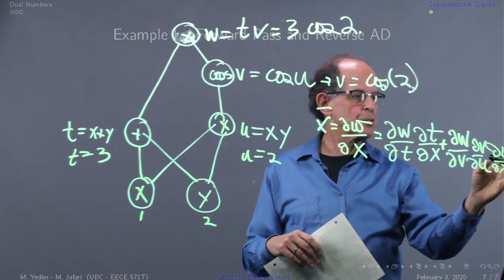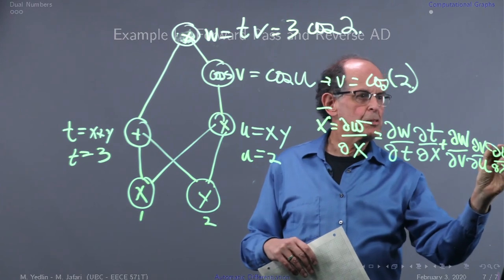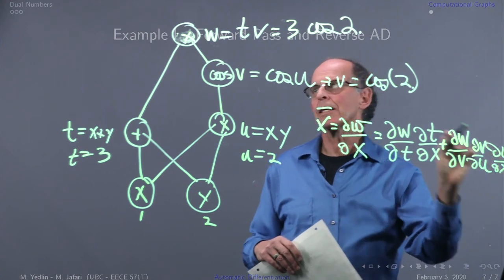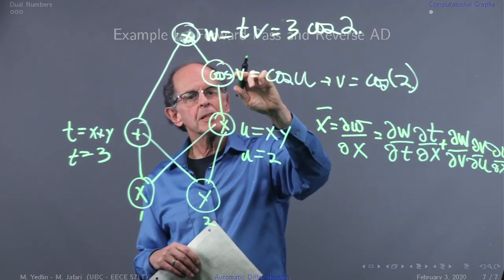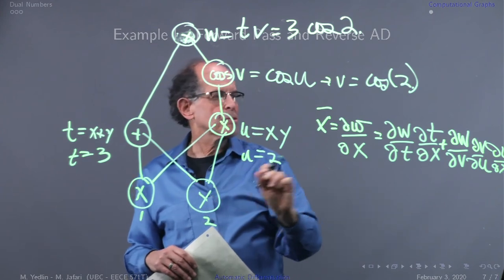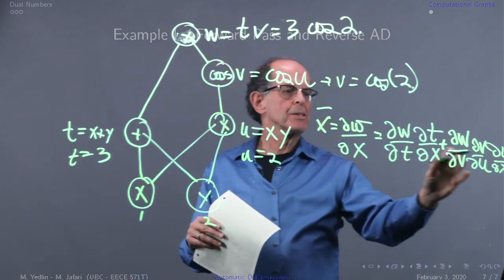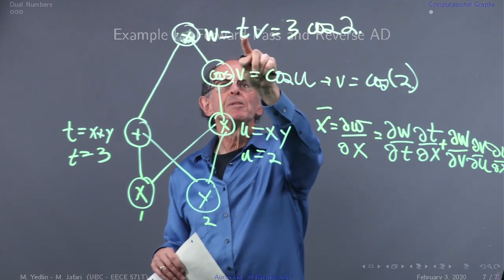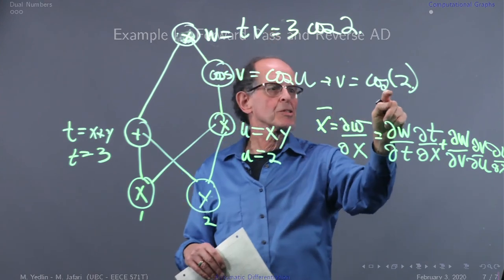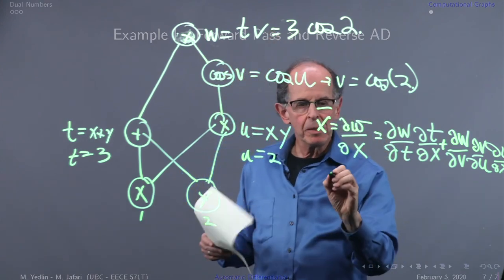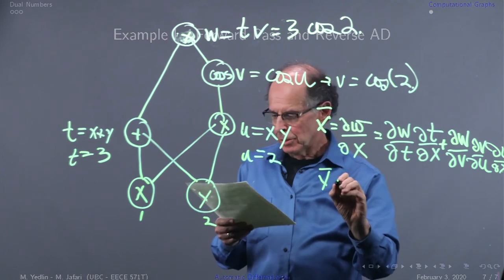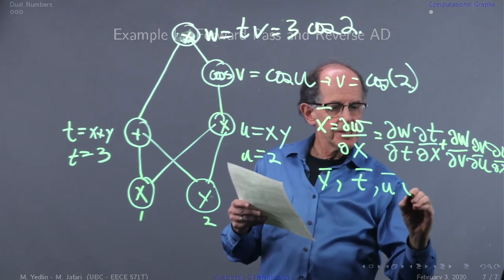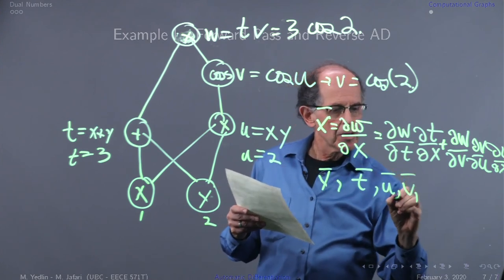So we have three derivatives: du/dx, so dw/dv dv/du du/dx, and you can substitute in all the values we've computed. For example, what is dw/dt? That's v, which is cosine(two), and so on. Similarly, we can do y dash, t dash, u dash, v dash.